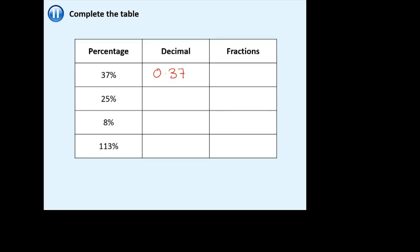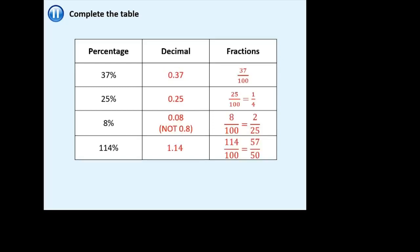Here are the answers. Be really careful — I see a lot of people who want to write 0.8, but it is not 0.8. When you divide by 100, that 8 moves from the units all the way to the hundredths column. Make sure you simplify where you can, because there's normally a mark for that. Here, for example, they're both in the four times table — divide by four. These are both in the two times table — divide by two. And this one you should know off the top of your head without any maths at all.